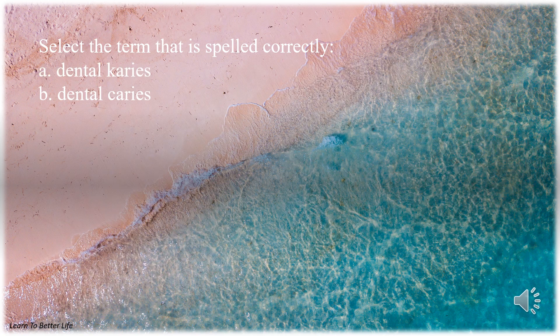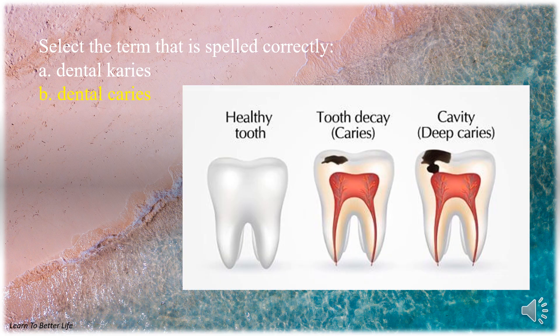Select the term that is spelled correctly. A. Dental caries with a K. B. Dental caries with a C. The answer is B. Dental caries with a C.